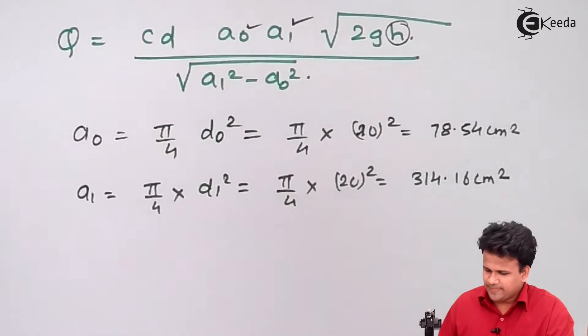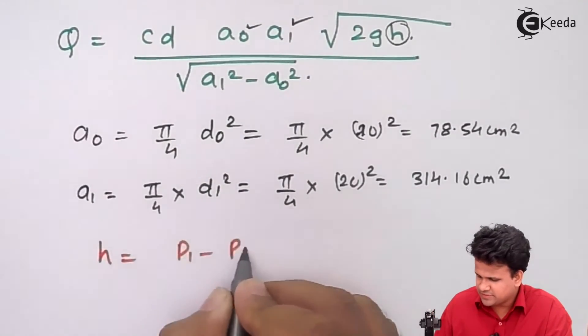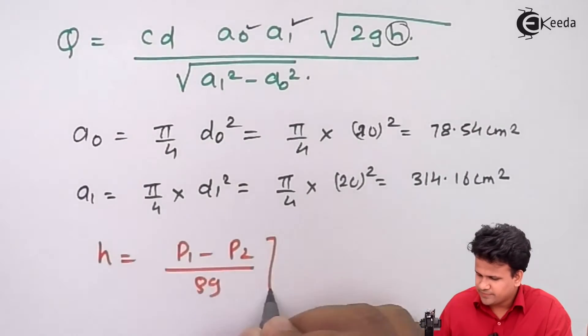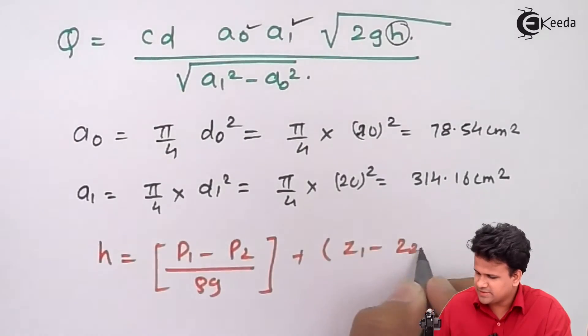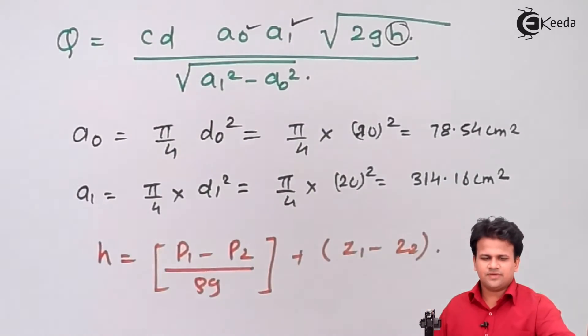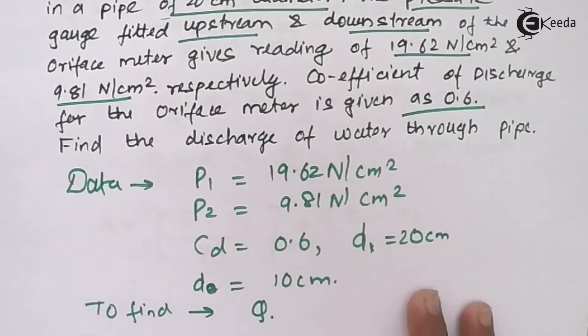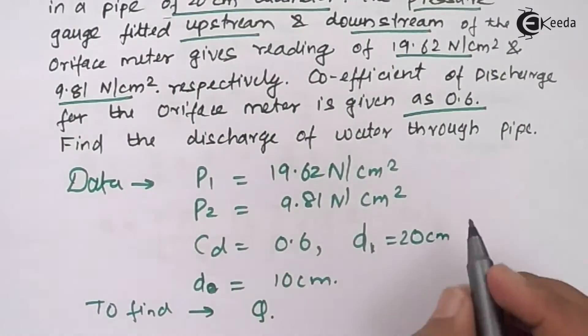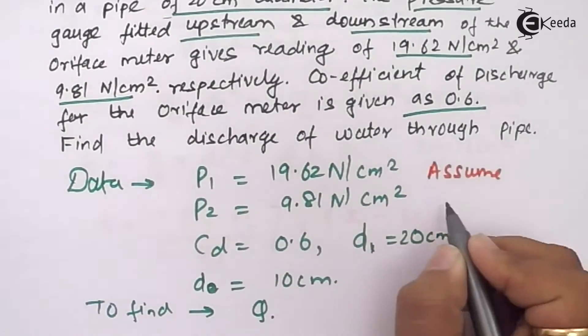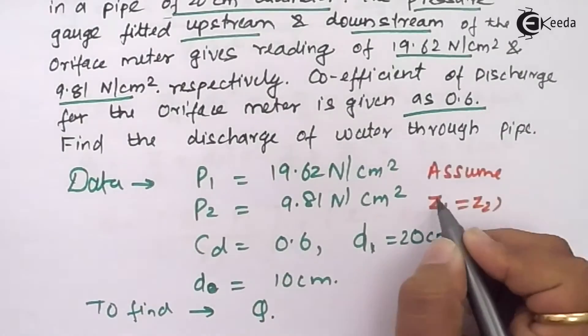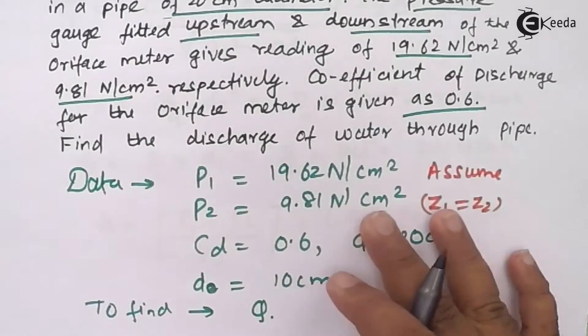The value of h equals p1 minus p2 upon rho g plus z1 minus z2. Since they have not specified the orifice meter orientation, we will assume the pipe is horizontal. If the pipe is horizontal z1 will be equal to z2.